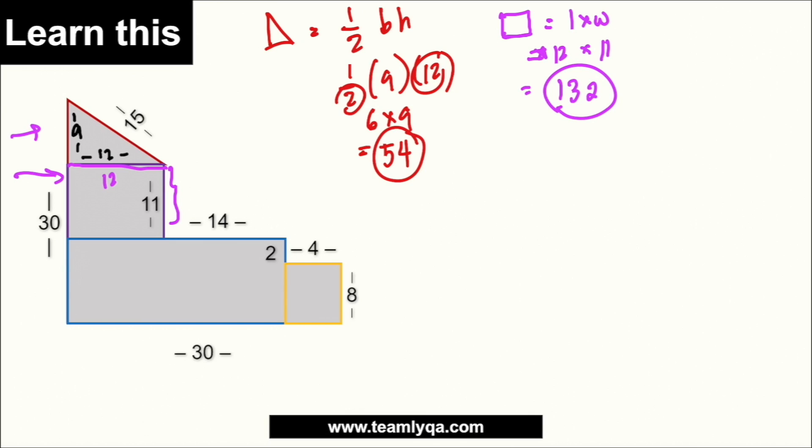So, kung nagtataka rin kayo saan ko kinuha yung 132, basically, ang ginawa ko, 120, kasi 12 times 10, 120, plus another 12, that is 132. That's how I do mental math. Again, the risk cost kini sa speed math na multiplication.